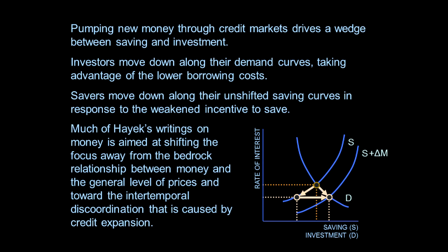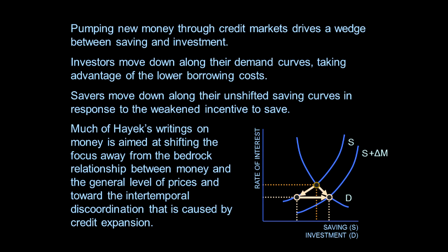Much of Hayek's writing on money is aimed at shifting focus away from the relationship between money and the general price level — the monetarist focus on M times V equals P times Q, where the whole concern is the relationship between M and P. Friedman nailed it: inflation causes prices to rise. But Q is a combination of consumption and investment lumped together — you don't look inside Q to see what's going on. Hayek shifted focus toward the intertemporal discoordination caused by credit expansion.